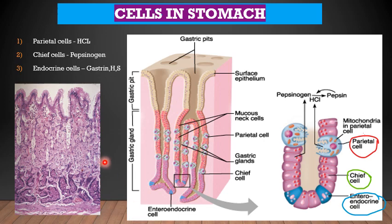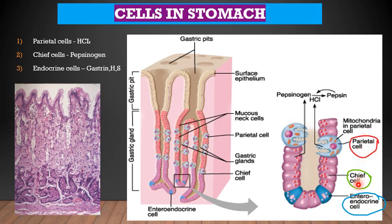Now we look at the types of cells present in the stomach. There are three main types of cells: parietal cells secreting hydrochloric acid, chief cells that produce the enzyme pepsinogen, and endocrine cells producing gastrin, histamine and somatostatin. The mucosa of the stomach is thrown into numerous holes known as crypts. These crypts are lined by these important cells: the parietal cell, the chief cells and the endocrine cells or ECL cells.